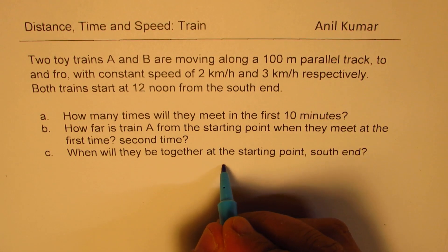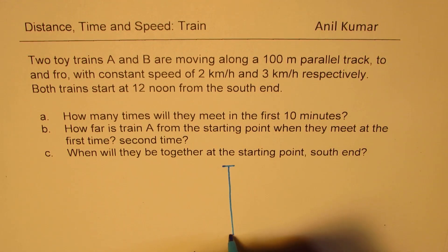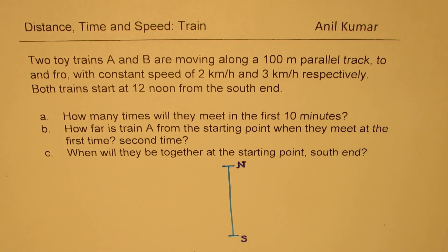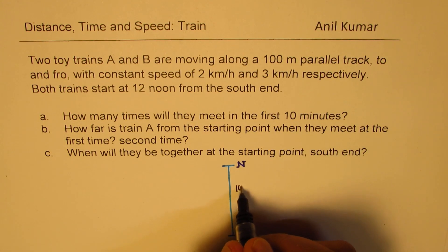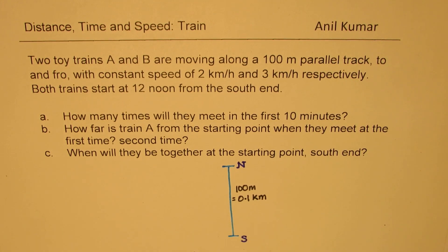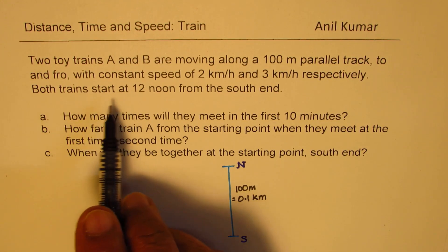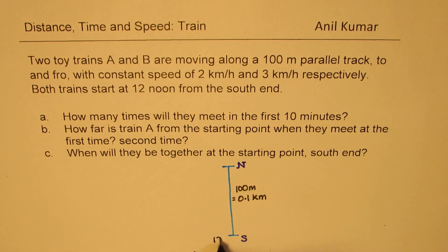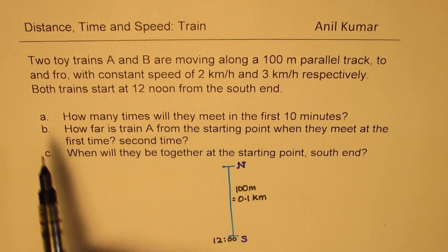We'll assume this is the track — between two points. We'll call one end the south end and the other the north end. The distance between them is 100 meters, which equals 0.1 kilometers. So these two trains start traveling from the south end at 12 noon.